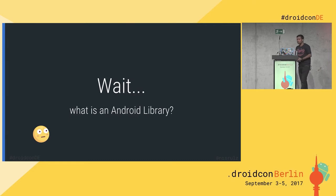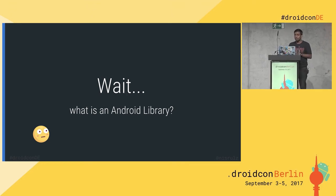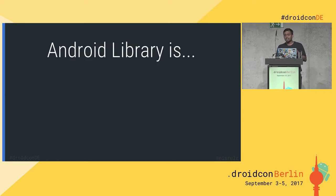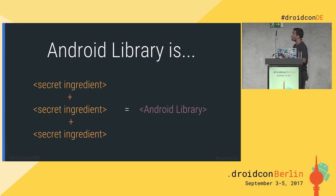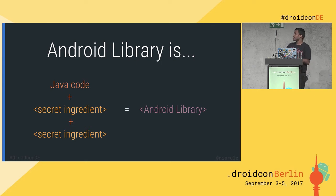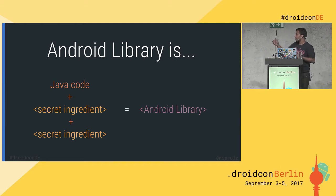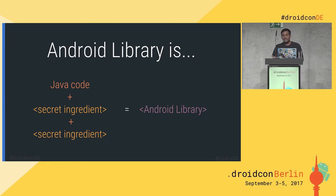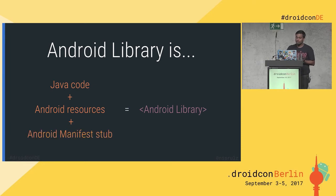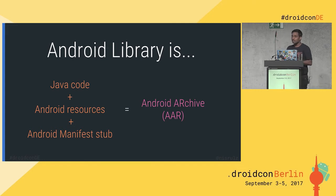What is an Android library? According to me, it's basically a reusable piece of logic written in code. But I like to put it as being made of three secret ingredients. The basics are Java code — if used in Java, you can have a JAR, which is a Java archive. An Android library also has Android resources and an Android manifest stub — a placeholder. When you combine all these, it forms an Android archive, or AAR. That's the Android library.